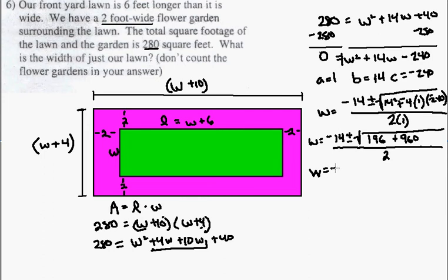Proceeding to the next step, w is equal to negative 14, plus or minus, adding those two terms together then, 196 and 960, I get 1,156, all over 2.